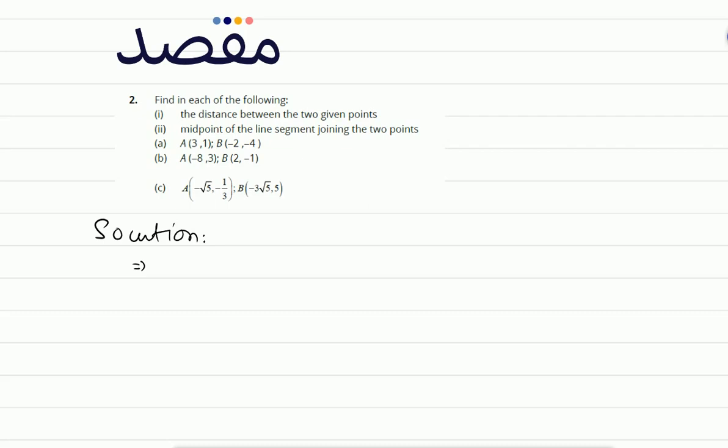And we have a given, how much a given? In the first part we have a given 3 and 1, and in the second we have a given -2 and -4.